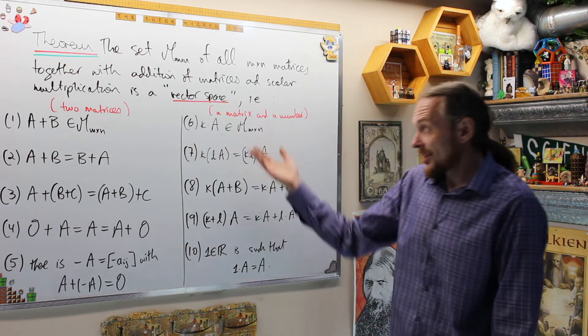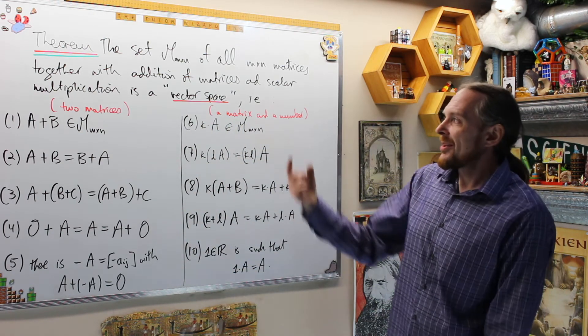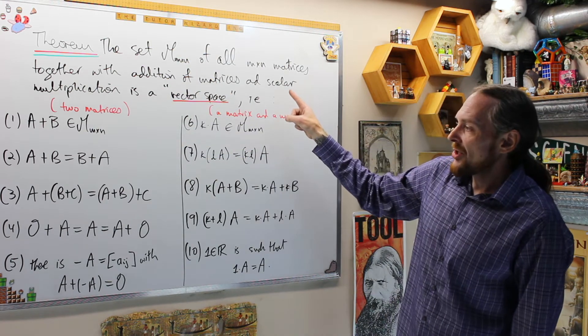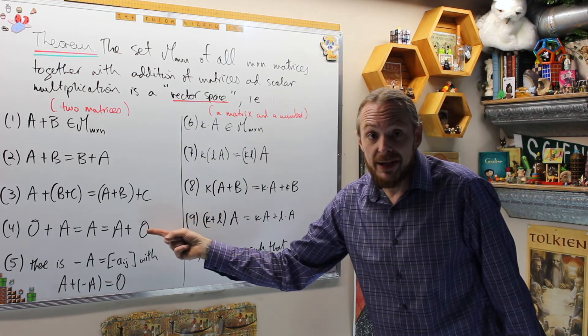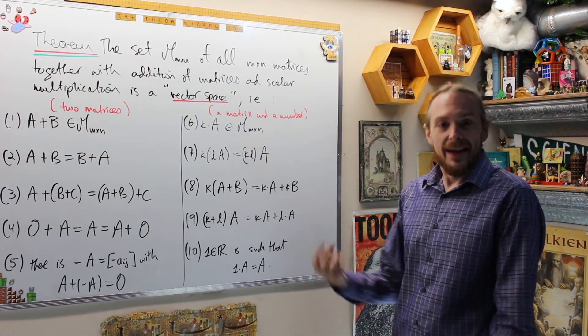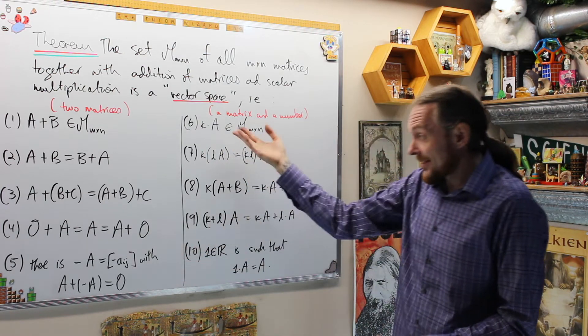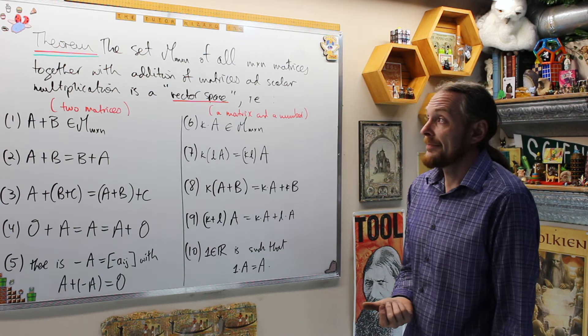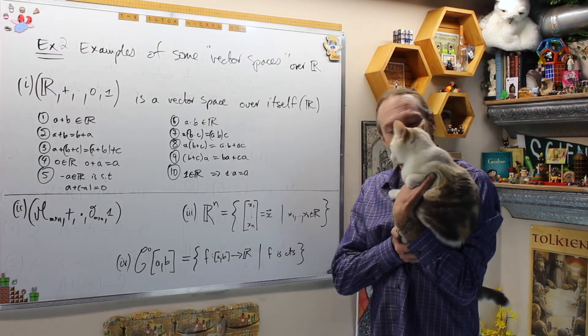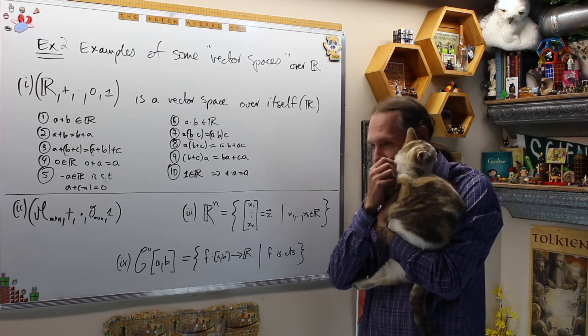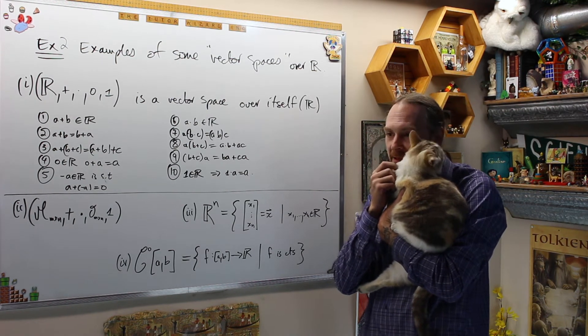These 10 axioms create a vector space. Anytime you can create an object, an addition, a scalar multiplication, a zero object with the addition, and a scalar identity, usually the number 1 over R, then if you can satisfy these 10 axioms, this is what we call a vector space in any context. Let's do a couple examples. I know, I know. This is a good part. We got vector spaces. We're just going to show them that everything you were using was a vector space.